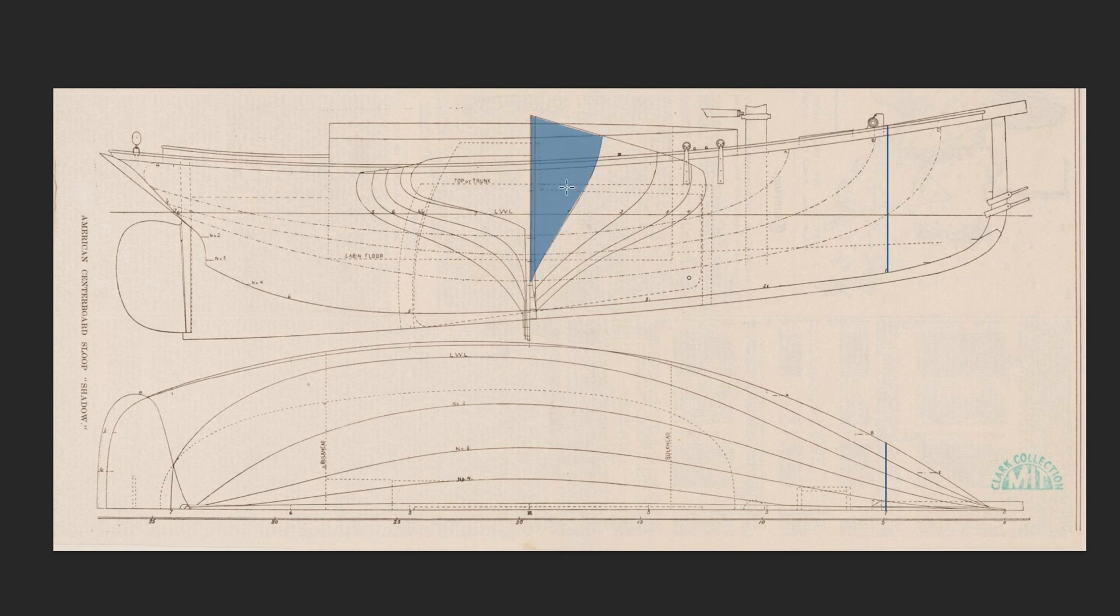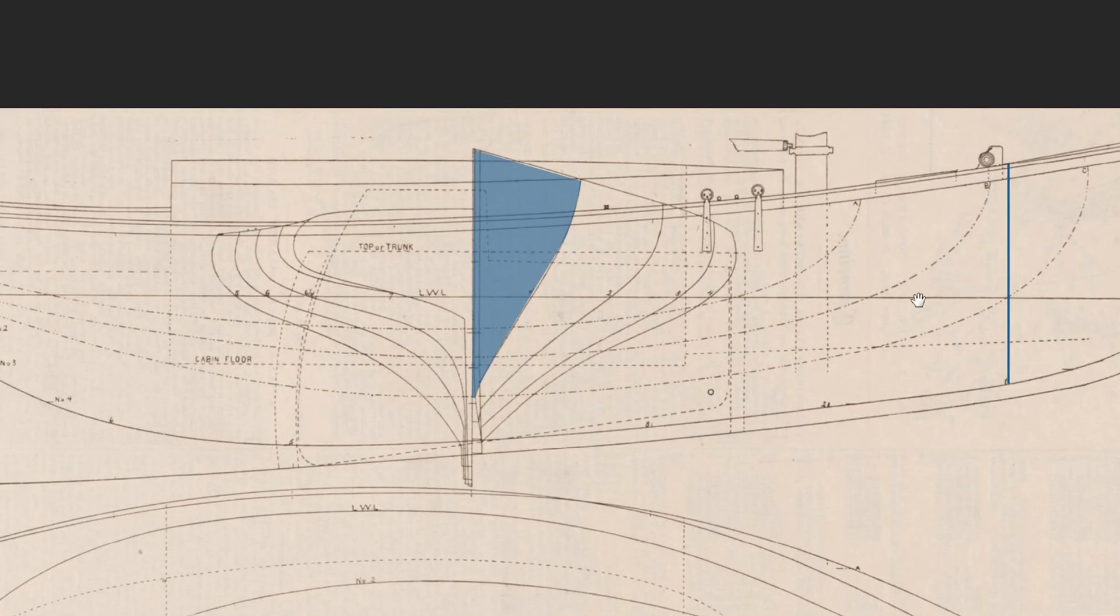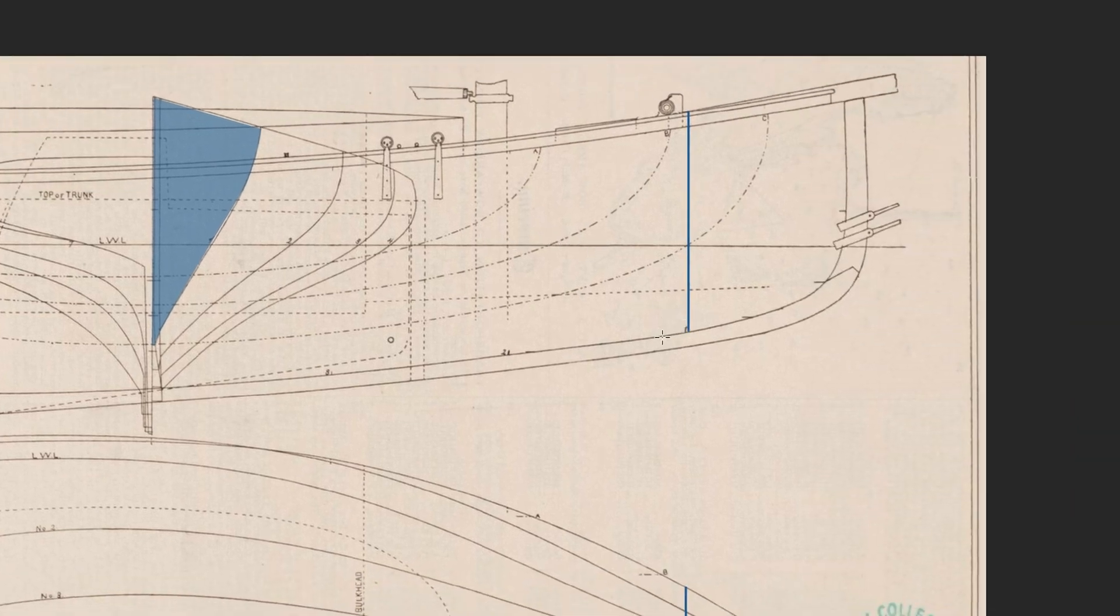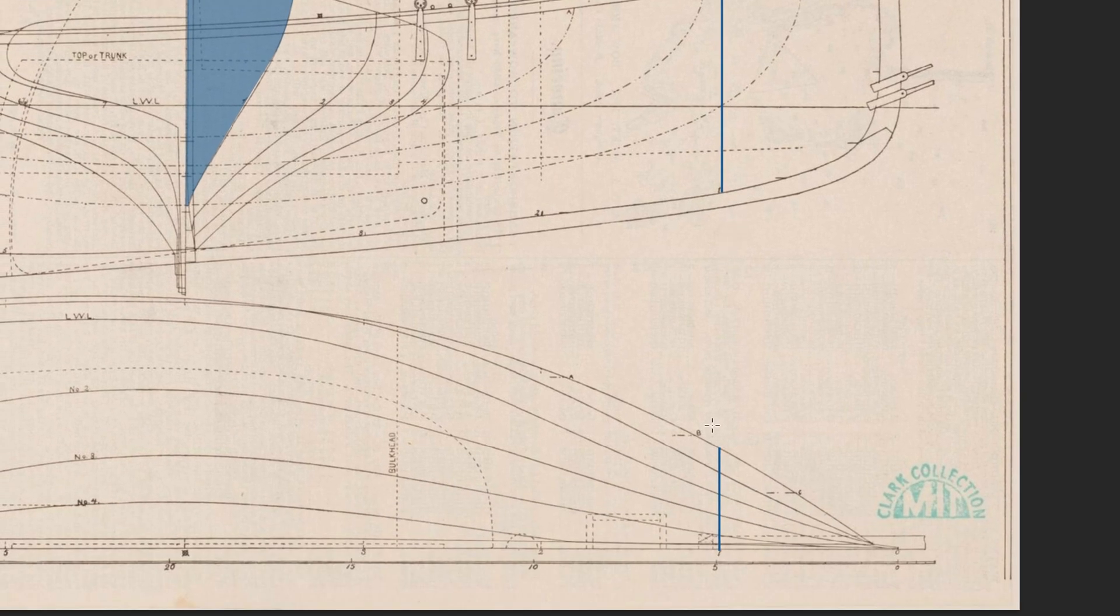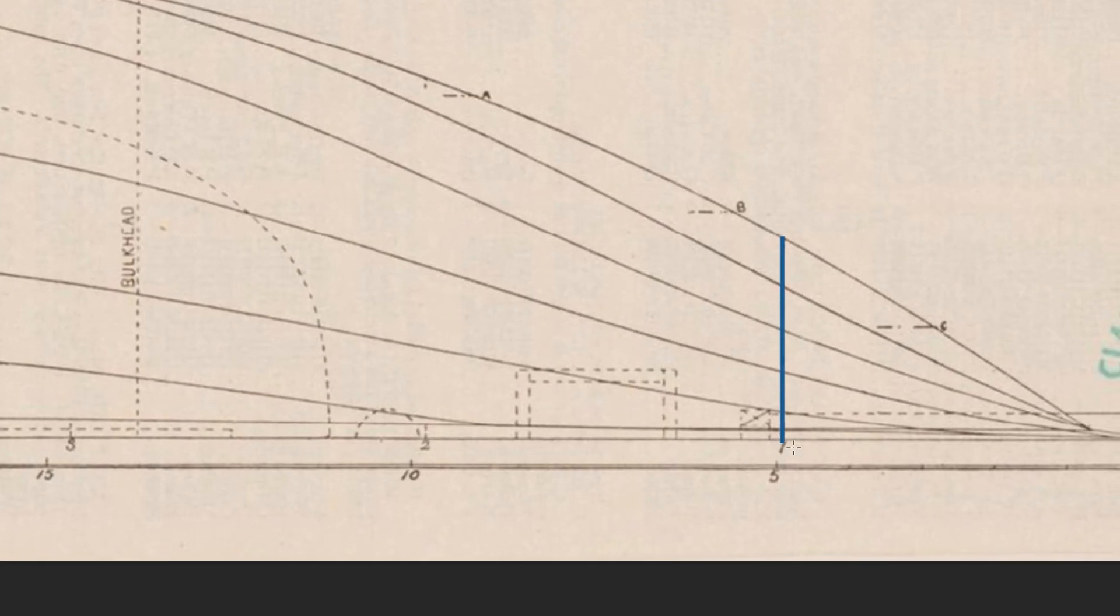So we have all of these sections here. For instance, this is labeled as section one. So there's one, two, three, four. And that corresponds to this number right here, section one. This is showing where the section is from a side and top view.